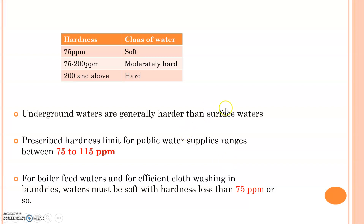One degree of hardness equals 14.25 ppm of hardness. Zero to 1 degree is extremely soft water; 1 to 6 degrees is reasonably soft water; above 6 to 7 degrees is reasonably hard water; at 15 degrees we say excessively hard water; and around 17 degrees of hardness, we say it is too hard to use. This is how we classify hardness based on the degree of hardness.